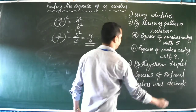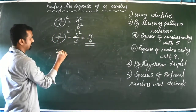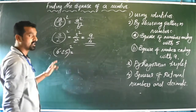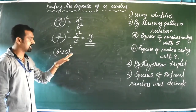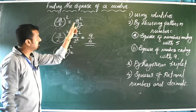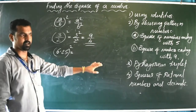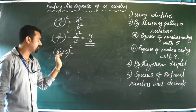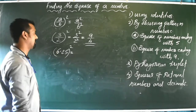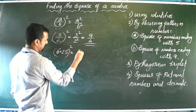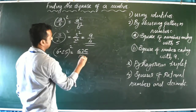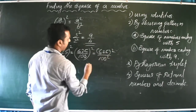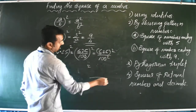To find the square of a decimal number, we convert it into a rational number first. For example, 6.25² — since there are two decimal places, we write it as 625/100. Then apply the formula: 625²/100². Find 625², then divide and write the answer as a decimal.